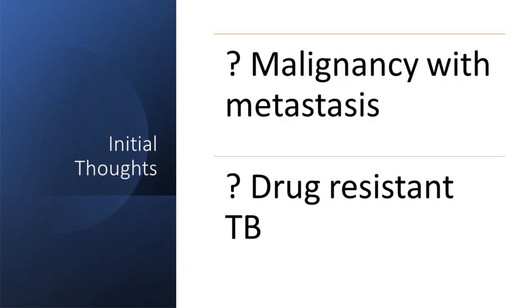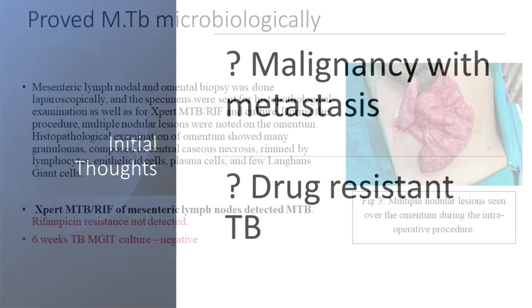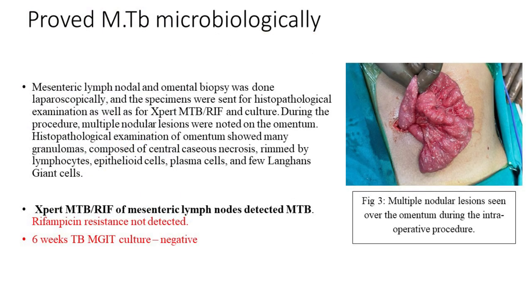We suspected either malignancy with metastasis or drug-resistant TB, so we proceeded with an omental biopsy. The surgeons showed us an omentum completely flooded with tubercules — on-table they told us it was TB. GeneXpert on the omental biopsy showed MTB that was rifampicin-sensitive, drug-sensitive TB. And still the child was running fever and deteriorating despite first-line drugs. Her six-week TB culture also came back negative.